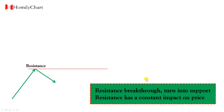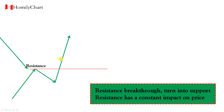For resistance and support, there are two properties we need to know. First, resistance can convert to support and support can convert to resistance. Second, resistance and support will have a constant impact on price. For example, we see here the previous high — the resistance. Once price breaks through, the resistance will convert to support.